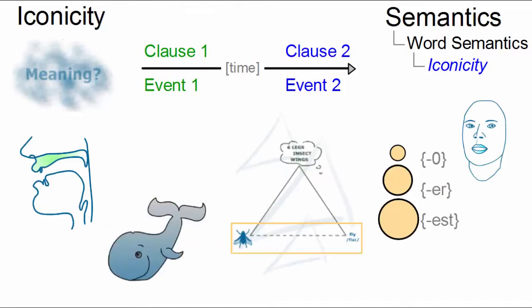Even though iconicity is now widely acknowledged to be a significant factor at many levels of linguistic structure, in most cases, however, the relationship between lexemes and their meaning is an arbitrary one.